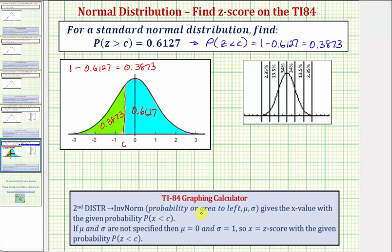So because the area must be on the left, we'll be using this area of 0.3873 to find the z-score or this value of c, which will satisfy the probability that z being greater than c equals 0.6127.